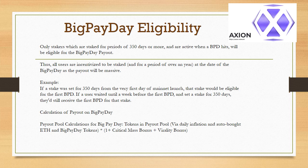Big Pay Day eligibility: only stakers which are staked for periods of 350 days or more, and are active when a Big Pay Day hits, will be eligible for the payout. Thus, all users are incentivized to be staked for a period of over a year at the date of their Big Pay Day, as the payout will be massive. Example: if a stake was set for 350 days from the very first day of mainnet launch, that stake would be eligible for the first BPD. If a user waited until a week before the first BPD and set a stake for 350 days, they'd still receive the first BPD for that stake.